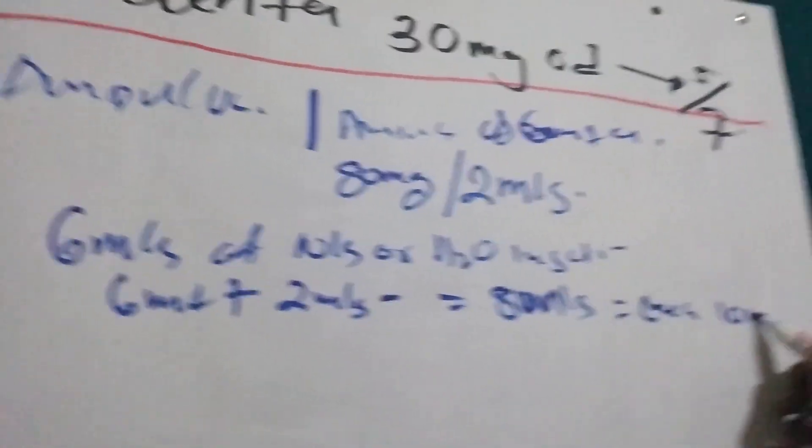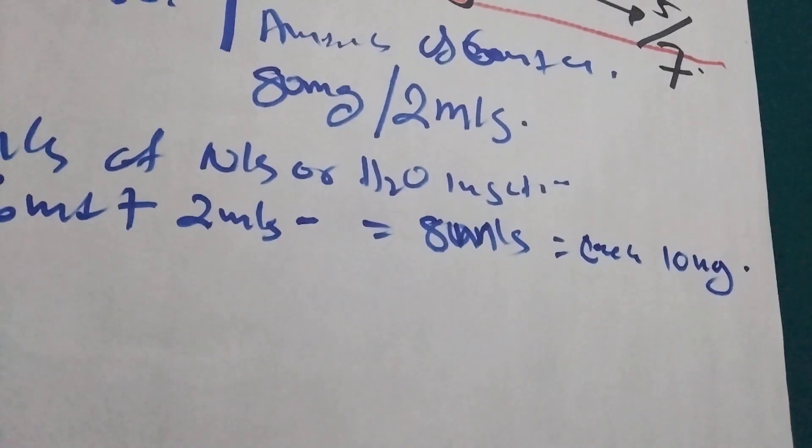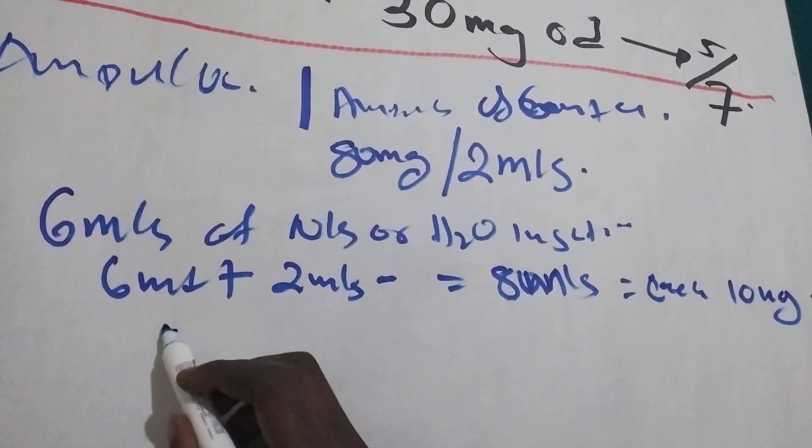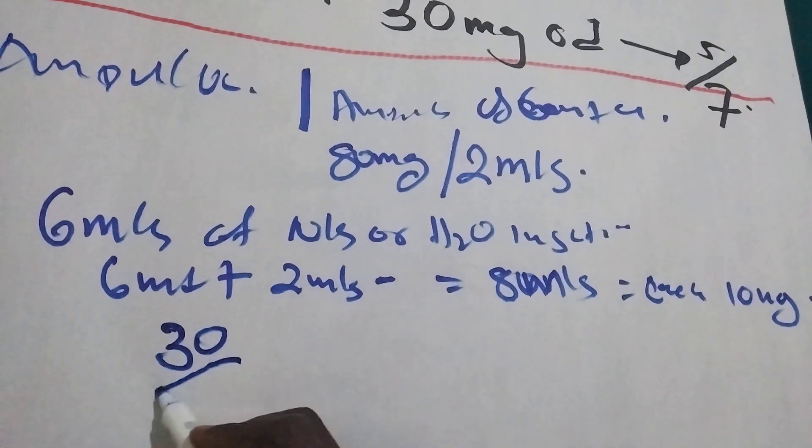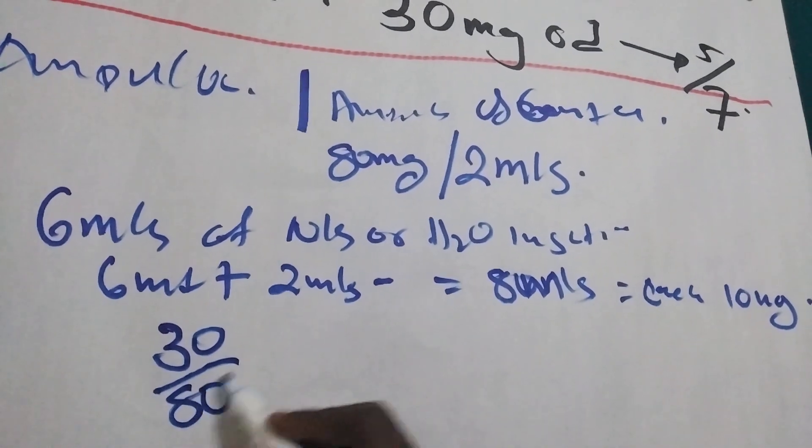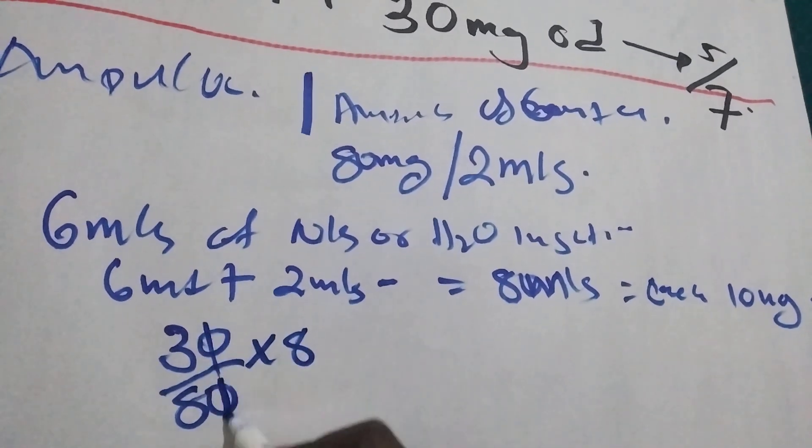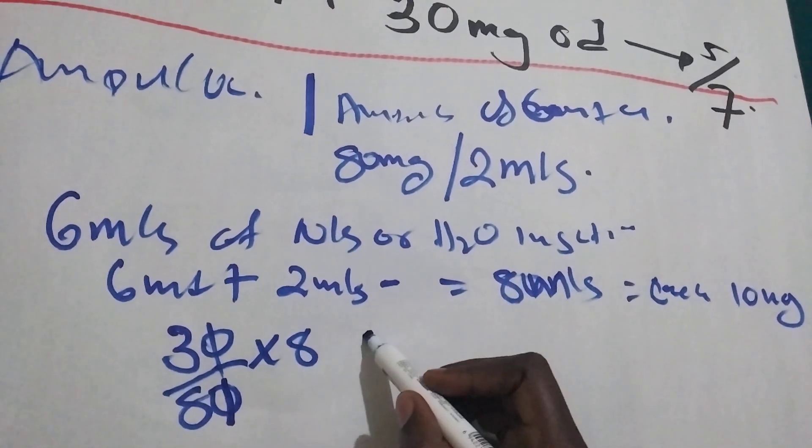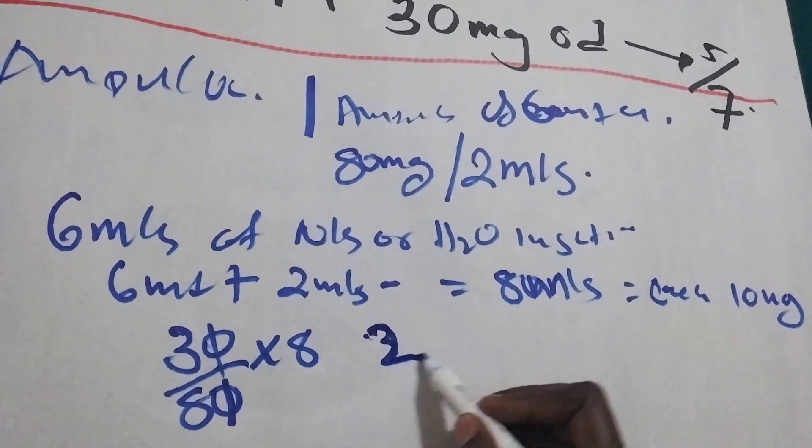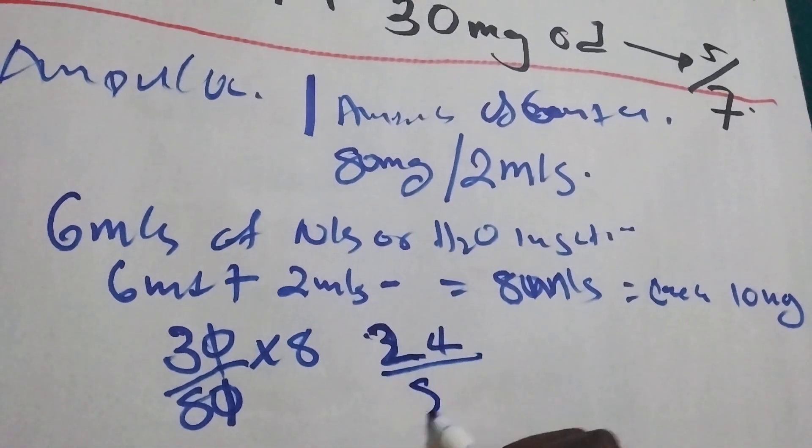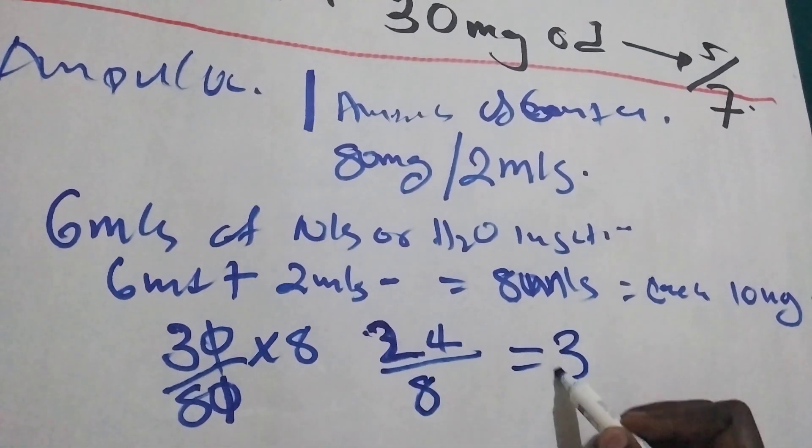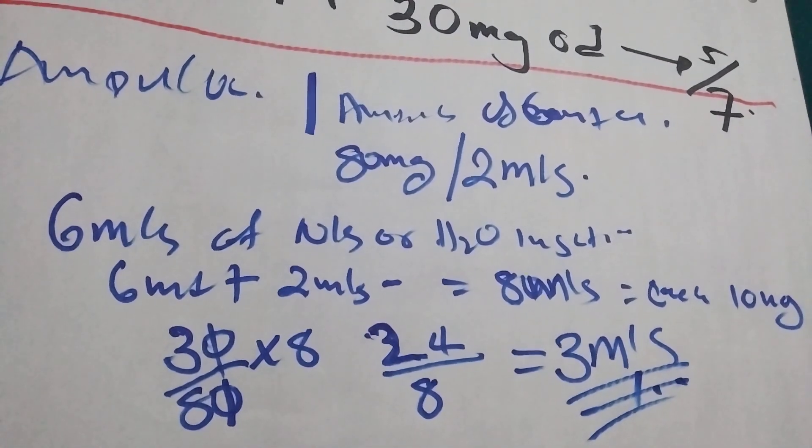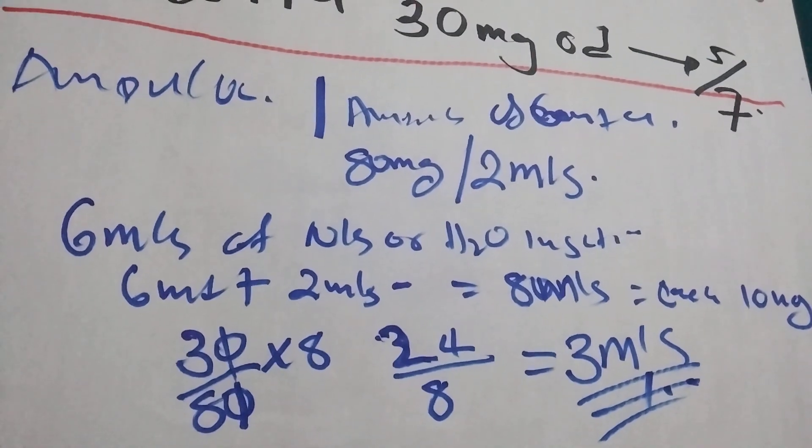So the doctor has prescribed 30, so we are going to do 30mg divided by 80 times 8. If you calculate like this, 3 times 8 is 24, then if we divide by 8 we are going to get 3mLs. So we are going to aspirate 3mLs and we are going to give to this person.